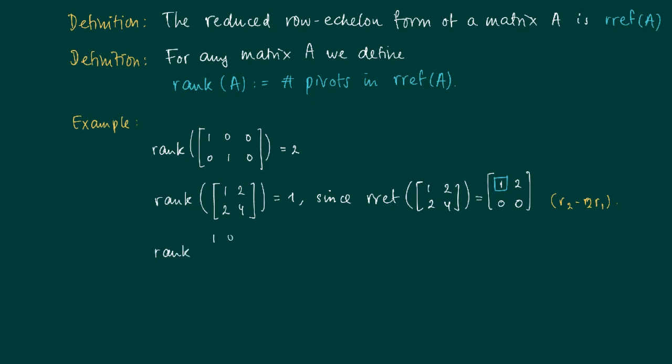While the rank of the following matrix, the 3 by 3 identity matrix, is of course 3, since we have 3 pivots: 1, 2, 3.